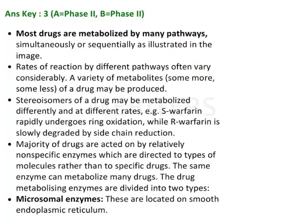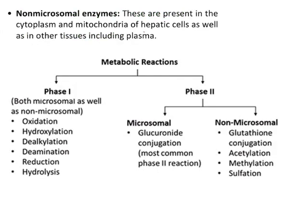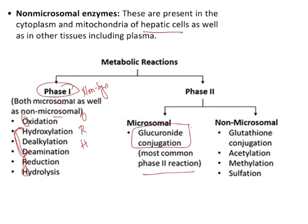Phase 1 is the non-synthetic phase and phase 2 is the synthetic phase. There are two types of metabolism reactions: microsomal and non-microsomal. Microsomal reactions are located on the smooth endoplasmic reticulum, while non-microsomal reactions are present in the cytoplasm and mitochondria of hepatic cells. Phase 1 undergoes both. Under phase 2, microsomal includes glucuronoid conjugation — the most common phase 2 reaction — and non-microsomal includes glutathione conjugation, acetylation, methylation, and sulfate groups.